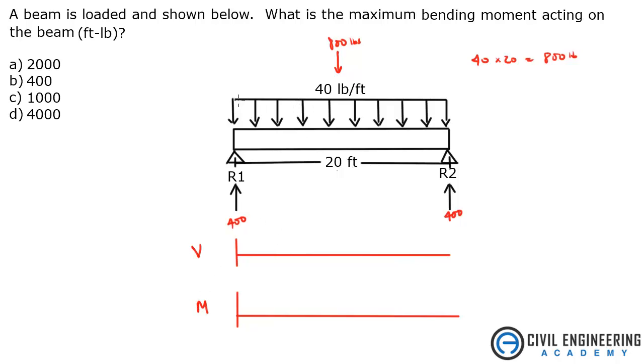So because this is a distributed load acting on the beam, I know that this shear diagram is going to be linear. It's not going to be constant. If it was just two reactions, it would be constant. It would be just a flat line, no slope. But because this is a distributed load, we're going to have a slope.